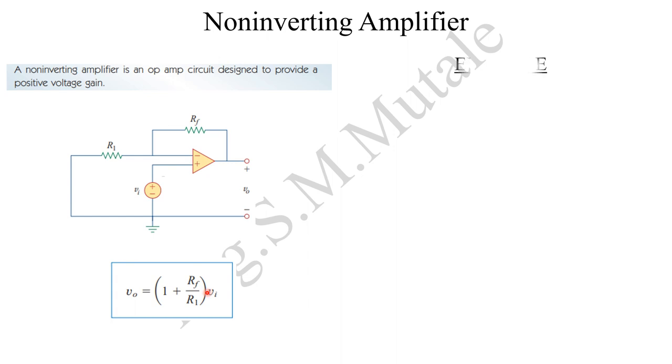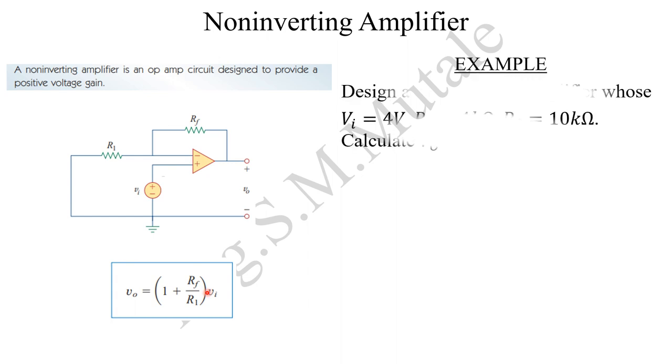So with that said, let's look at an example. Design a non-inverting amplifier whose input voltage is 4 volts, R1 is 4 kilo ohms, feedback resistor is 10 kilo ohms, and then calculate output voltage.